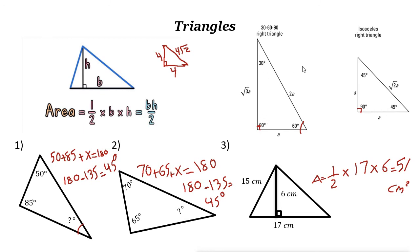For example, in a 30-60-90 triangle where the side opposite the 30-degree angle is 3 centimeters, the hypotenuse is twice that, which is 6 centimeters. The side opposite the 60-degree angle is 3 root 3 centimeters — that is, the opposite of 30 multiplied by root 3.